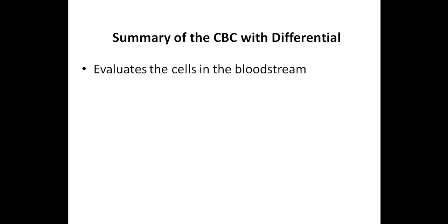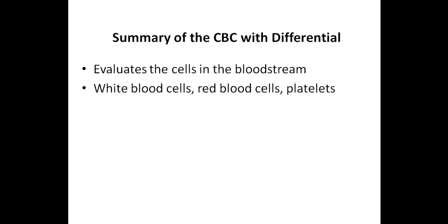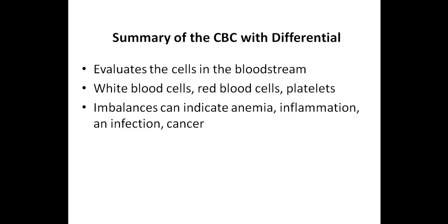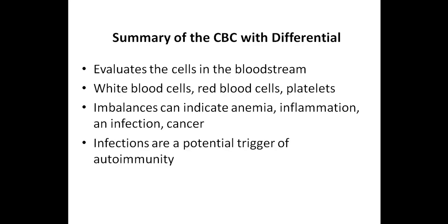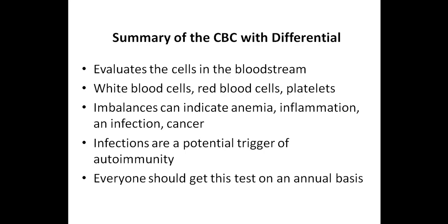So let's quickly summarize the CBC with differential. A CBC evaluates the cells in the bloodstream. It looks at three main types of cells, which includes white blood cells, red blood cells, and platelets. Imbalances in these cells can be an indication of anemia, inflammation, an infection, and even cancer. Infections are a potential trigger of autoimmunity, and while a CBC with differential won't specifically identify infections, it can give you an idea if you have a bacterial, viral, or parasitic infection. The truth is that everyone should get a CBC with differential on an annual basis, and not just those people with autoimmune conditions. The good news is that most health insurances will cover this test, and even when they don't, the out-of-pocket expense is low.